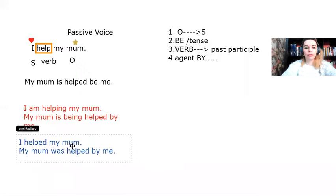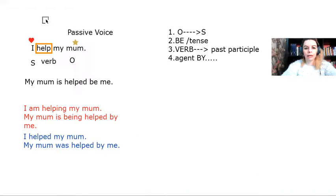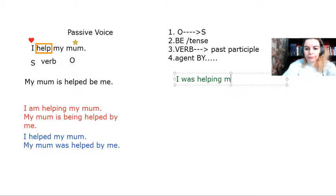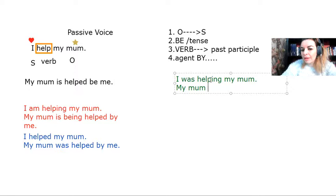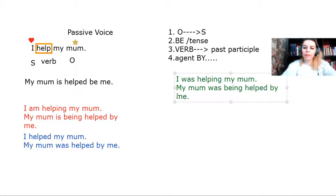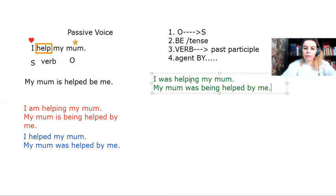In the past continuous could be something like this. Yesterday, I was helping my mom all day long. Now, what I do is front the subject once more and then put the verb be in the past continuous form. My mom was being helped by me. And that's the past continuous in the passive.